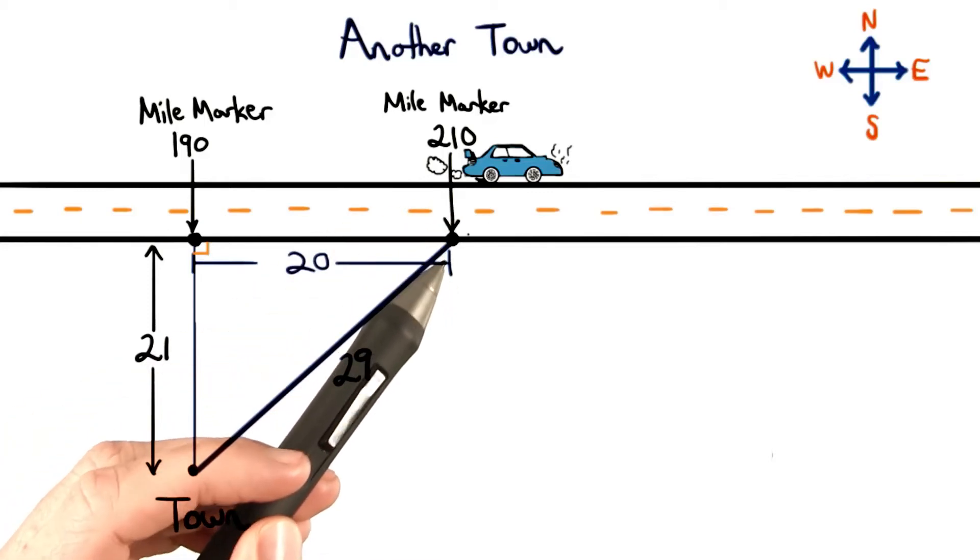But before you put your map away, your friend sees another town located seven miles south of mile marker 234.